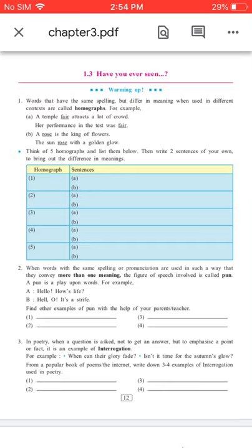The first column is homograph and the second column is sentences. For each homograph you have to write two sentences in A and B.